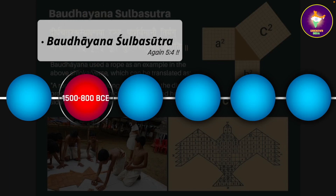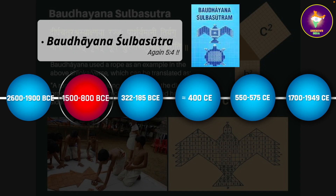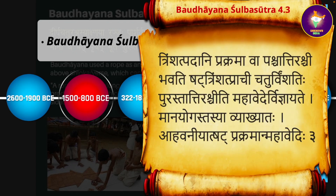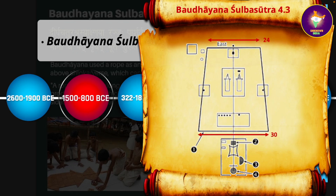Baudhayana's Shulba Sutra is dated around 800 to 1000 BCE. Shulba in Sanskrit means measurement, so this work contains rules and procedures related to geometry and measurement. As you may know, the theorem by Baudhayana on the relationship between the three sides of a right-angle triangle preceded that by Pythagoras by a few centuries. In verse number 3 of chapter number 4 of the Baudhayana Shulba Sutra, the dimensions of the Mahavedi are given as 30 prakramas on the western side and 24 prakramas on the eastern side — in the ratio of 5 to 4. A prakrama is an ancient Indian unit of measurement equal to 30 angulas, each angula being 1.76 centimeters, so a prakrama is approximately 53 centimeters.